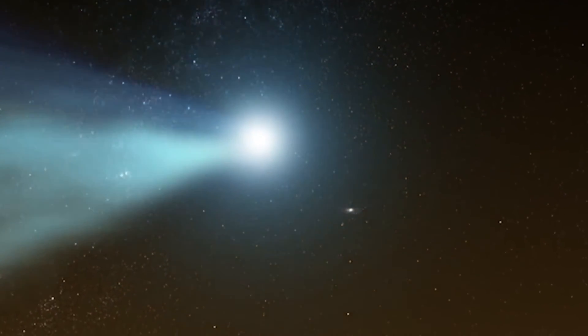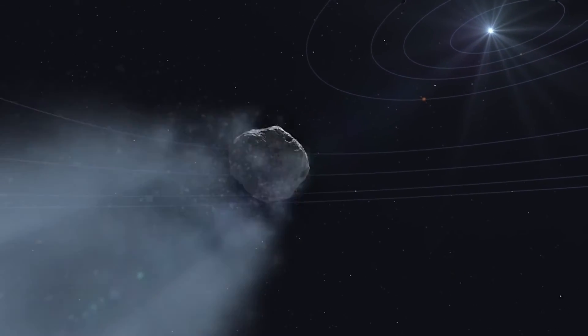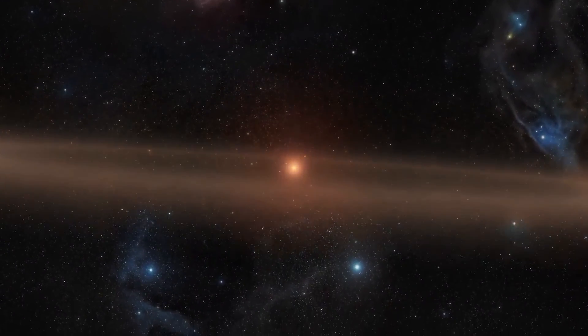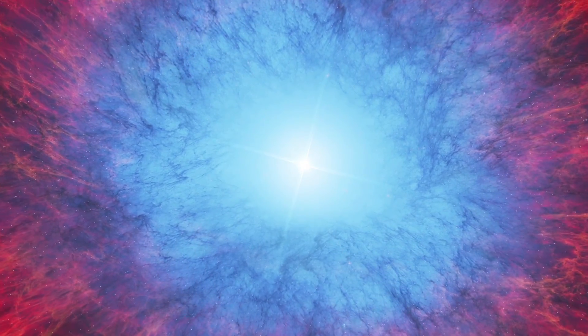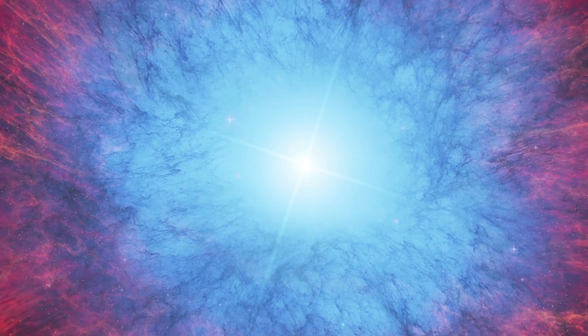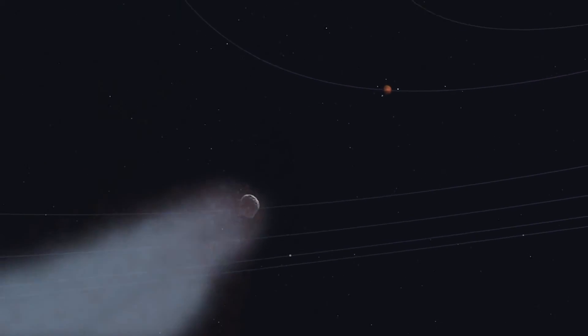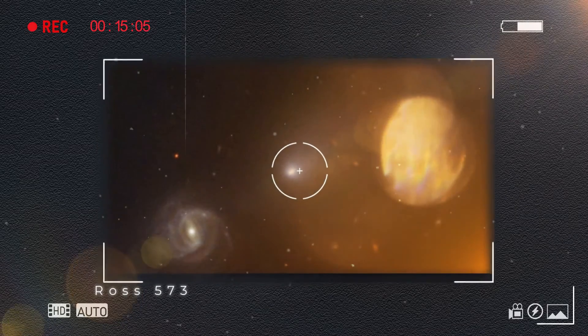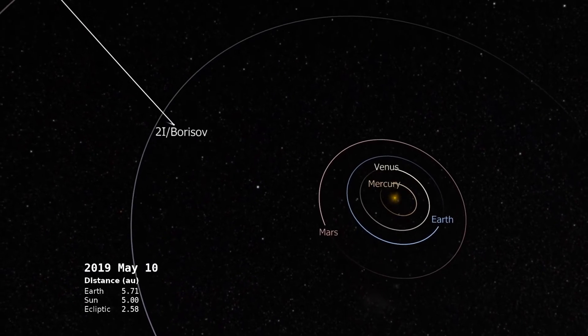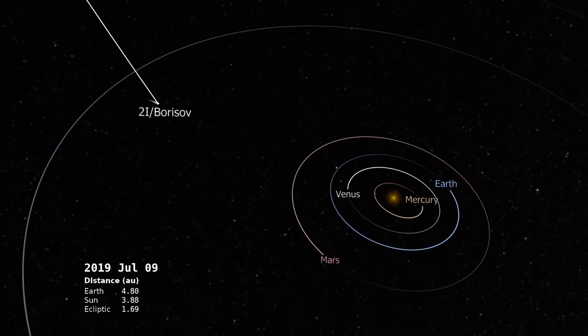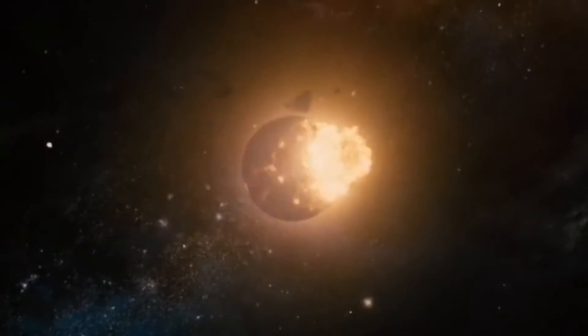The exciting thing is that Oumuamua started to seem even stranger because of 2I Borisov. Its origins are believed to be from an ancient solar system that revolves around a red dwarf. Red dwarfs are the most common type of star, and they are also the dimmest type of star to exist. Based on its speed and trajectory, the hypothesis suggested that it might have come from Ross 573, a red dwarf. Ross 573 is located approximately 20.6 light-years from the Sun. Some suggest that these objects could be debris from a collision of three large objects around Ross 573 about 900,000 years ago.